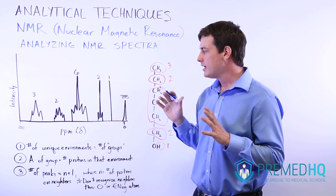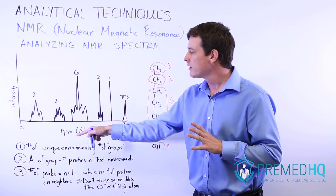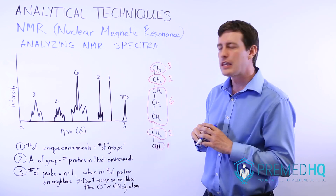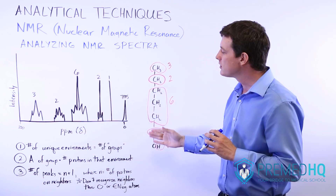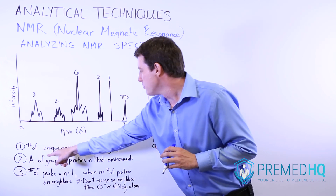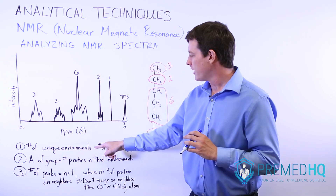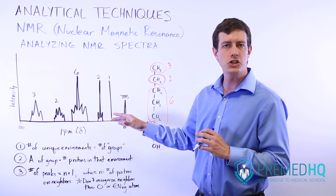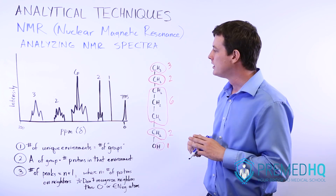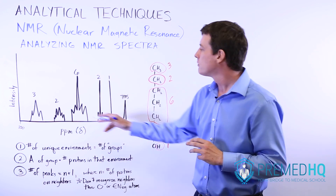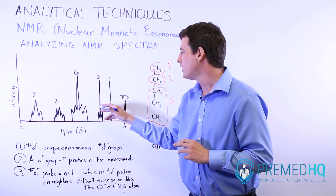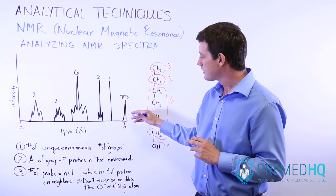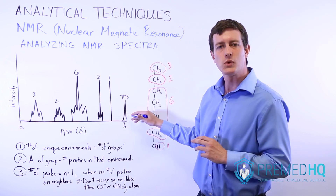There are three steps, and each one tells you more information. The first step is you look at the number of unique environments, and that will tell you the number of groups that show up on your NMR spectra. Here we have five different groups, plus this one.